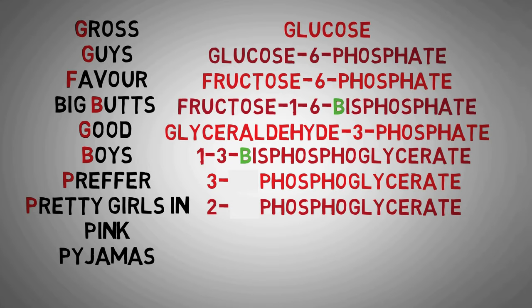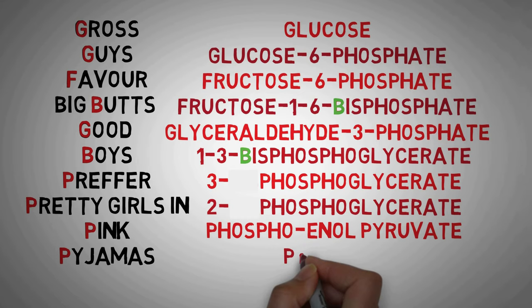The P in pink stands for phosphoenol pyruvate, and the P in pajamas stands for pyruvate, which is the last molecule generated in the pathway of glycolysis.